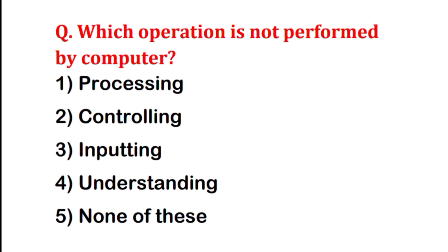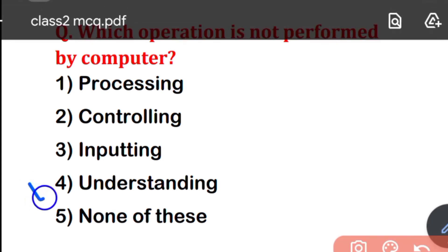What is the operation that a computer cannot perform? Options are: Processing, Controlling, Inputting, Understanding, or None of these. Processing, Controlling, and Inputting are things a computer does. The correct answer is Understanding — a computer is a machine that doesn't have understanding.